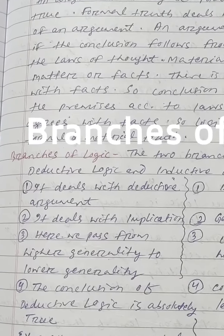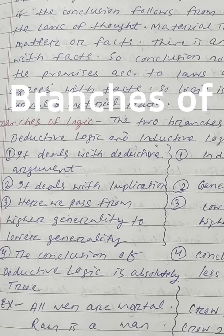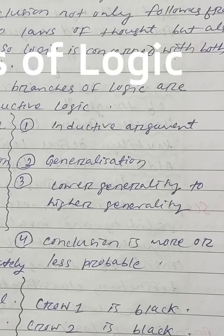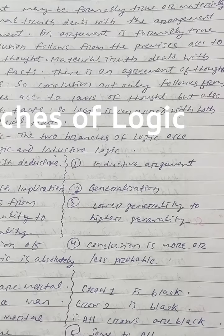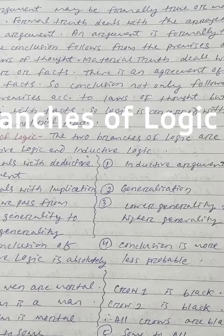The conclusion of deductive logic is absolutely true. By following the premises, the conclusion is true. But in inductive logic, the conclusion is more or less probable — it is not certain but probable.